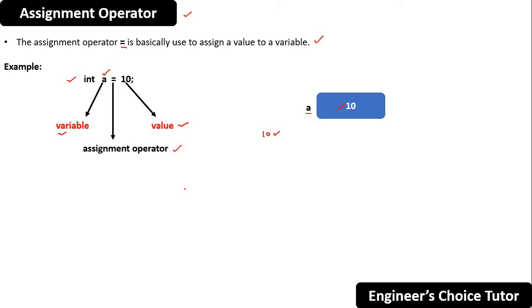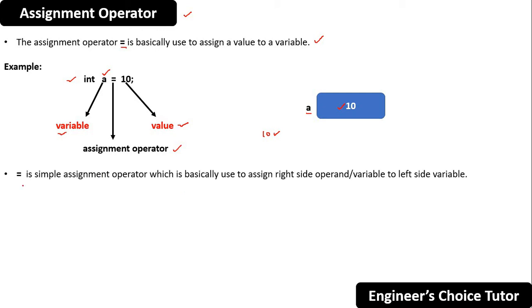Another definition: this equal to is a simple assignment operator which is basically used to assign the right side operand or variable to the left side variable.